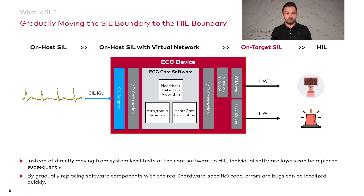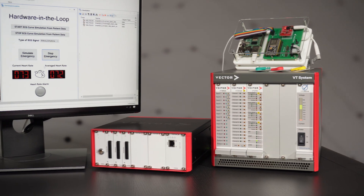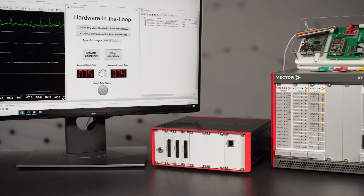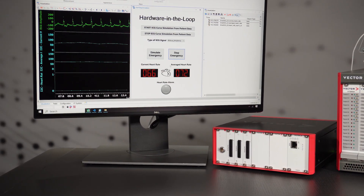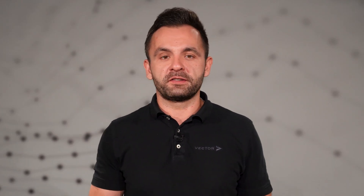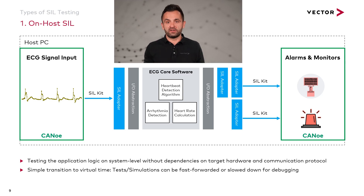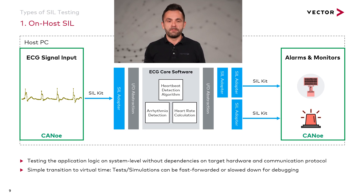The last step of the system level tests is the HIL phase, where you test the whole device with its final software. Now let's take a deeper look into some of the different phases and how they work — for example, the on-host SIL phase. The idea of this phase is to simulate the ECG input signal in Kanu and inject the sensor values virtually into the core software of the running ECG application. Moreover, the alarm actuator and patient monitor that receive the alarm states and heart rates are simulated in Kanu.